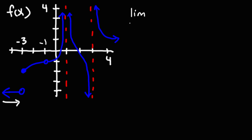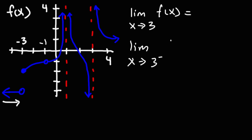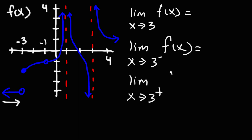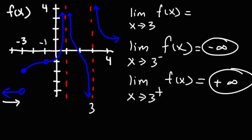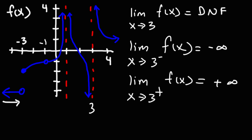Let's try another problem. What is the limit as x approaches positive 3? Does it exist or does it not exist? Well, let's check the one-sided limits. Here is positive 3, which is at the second vertical line. As we follow the curve from the left side, notice that it's going down towards negative infinity. Now as we follow the curve to the right side of positive 3, the y value is going up to positive infinity. Negative infinity doesn't match with positive infinity, so the limit does not exist.